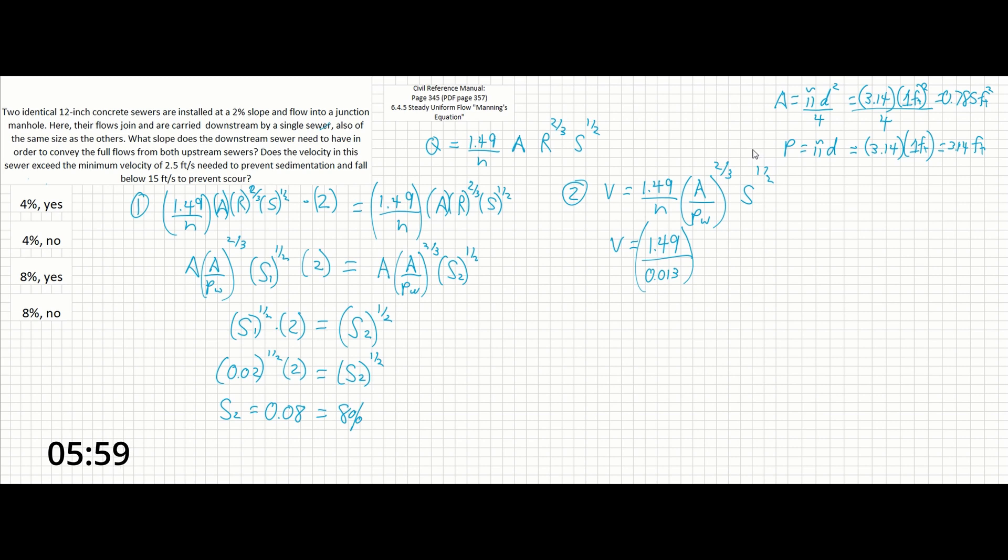So I did that up here just so we can simplify what we're writing out down here. This is 0.0785 feet squared over 3.14 feet, and all of that is to the two-thirds, and our slope that we just solved for is 0.08 to the one-half.